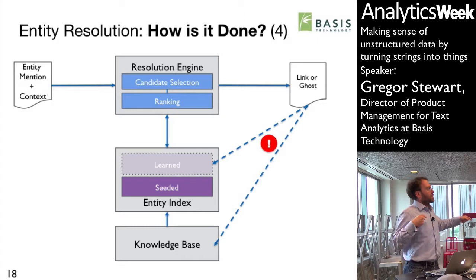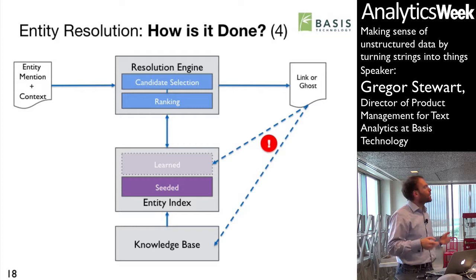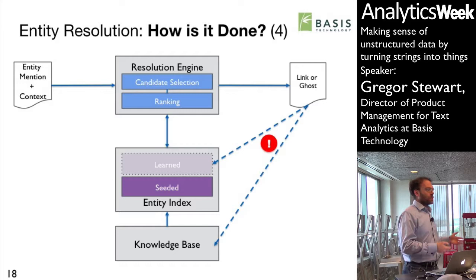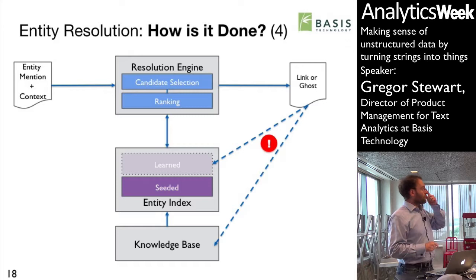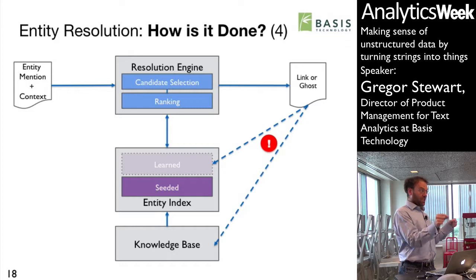It will give you an ID for your knowledge source — such as a Freebase ID — which you can then query for more information, or it will give you a null entity saying you need to find a reference for this. If you so wish, it will also learn both the mentions — the specific way of talking about this entity — and the contexts. Over time, it will accumulate those to better match, accumulating not only the different ways of talking about something but the context in which it's been seen.